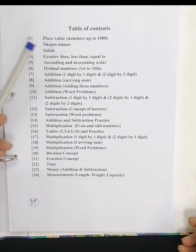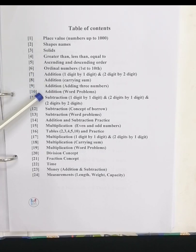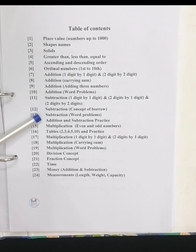Okay, let's start. Here at number one we have place value up to 1000, and next shapes names, solids, greater than less than equal to, and ascending and descending order, ordinal numbers.